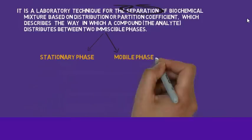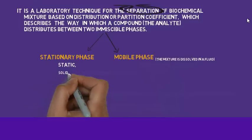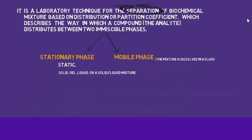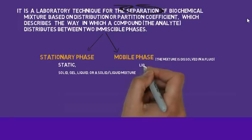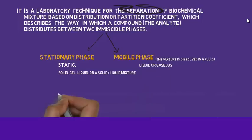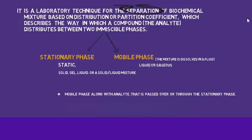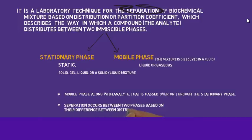The mobile phase is the mixture that dissolves in the fluid. The stationary phase is static in nature and made up of solid, gel, liquid, or solid-liquid mixture. The mobile phase is in liquid or gaseous form. The mobile phase, along with the analyte you want to separate, travels over the stationary phase and distributes between the two phases based on differences in distribution coefficient.